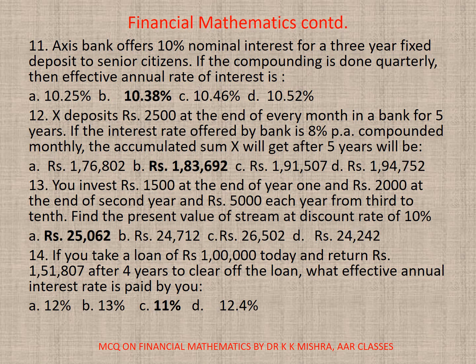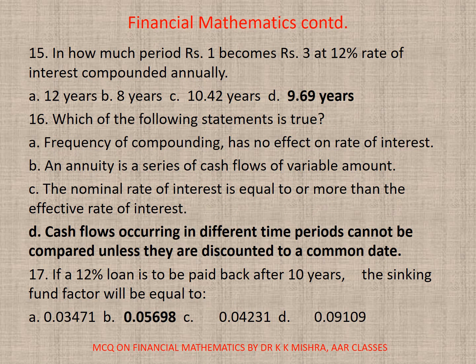Question 14: If you take a loan of rupees 1 lakh today and return rupees 1,50,1807 after 4 years to clear the loan, what effective annual rate is paid by you? The correct option is C — 11.15%.